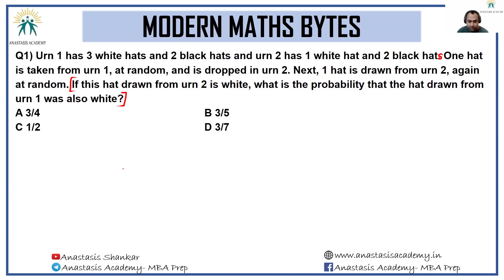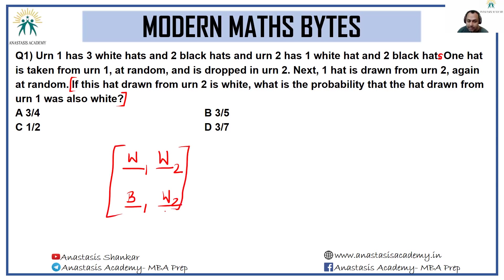What we have been told is: first something is drawn from urn one, and then something is drawn from urn two. Within urn two, we know what comes out is definitely white — this is the condition. From urn one we have two cases: either a white hat came out or a black hat came out. Both these cases are possible, and this constitutes our sample space. Only the case W1, W2 is our favorable event.